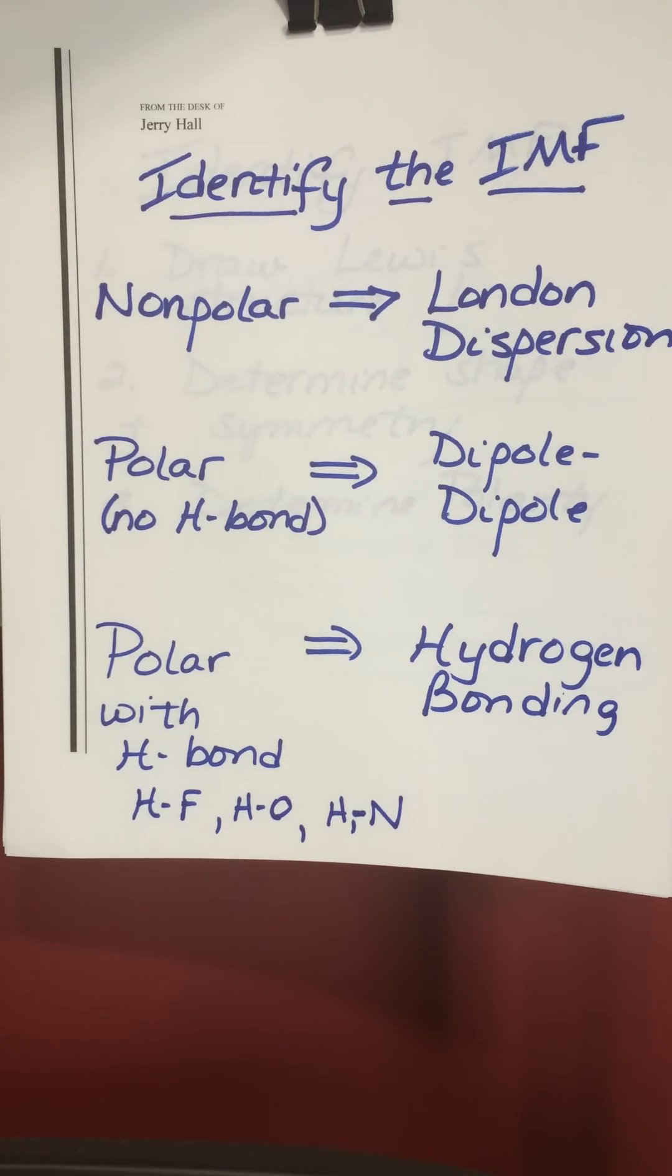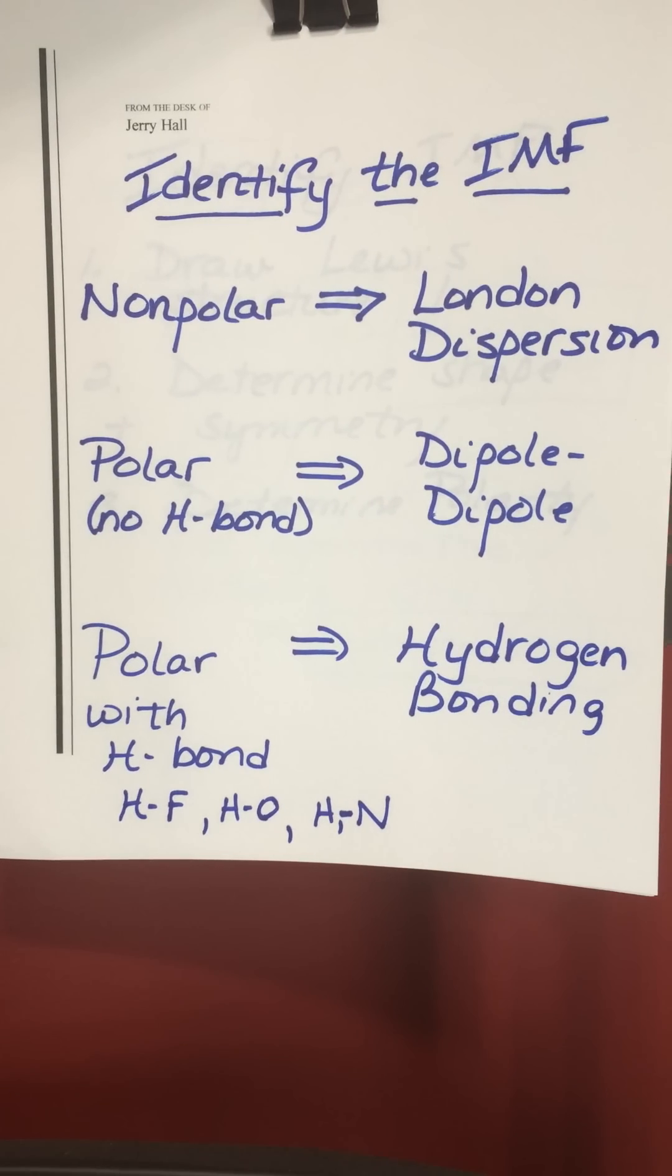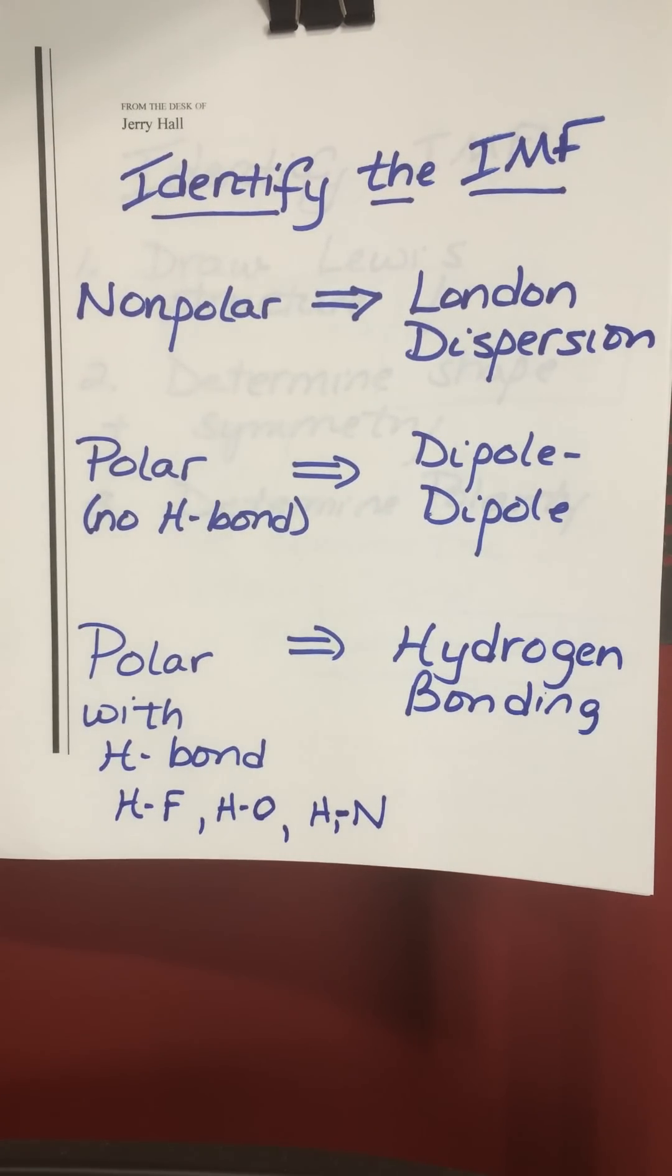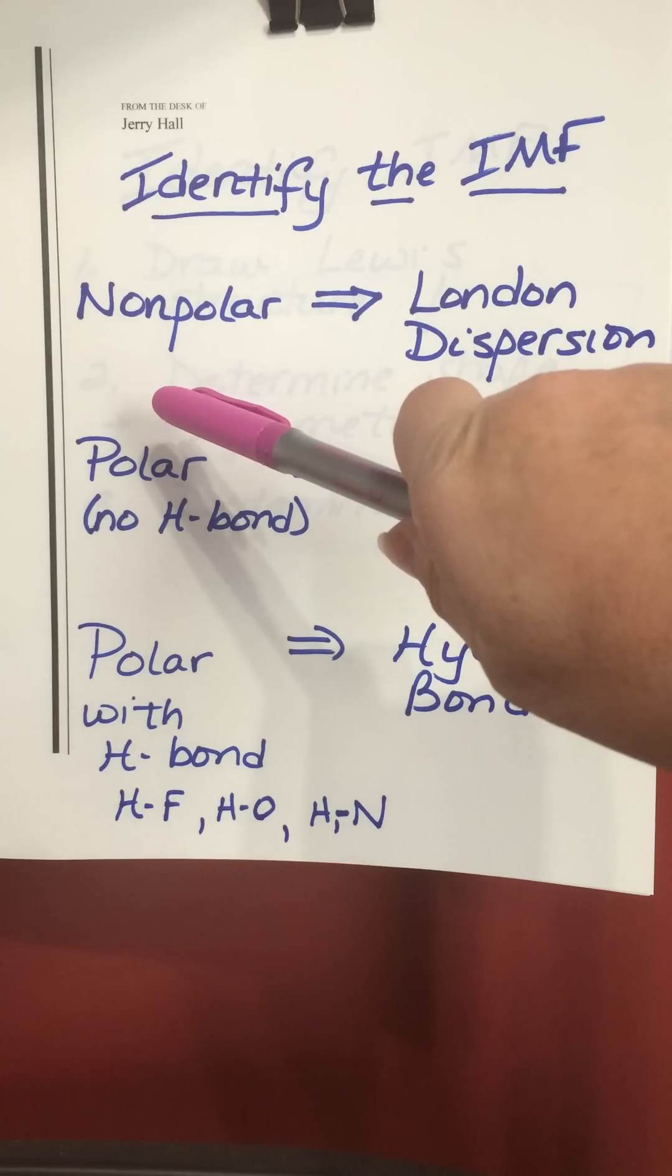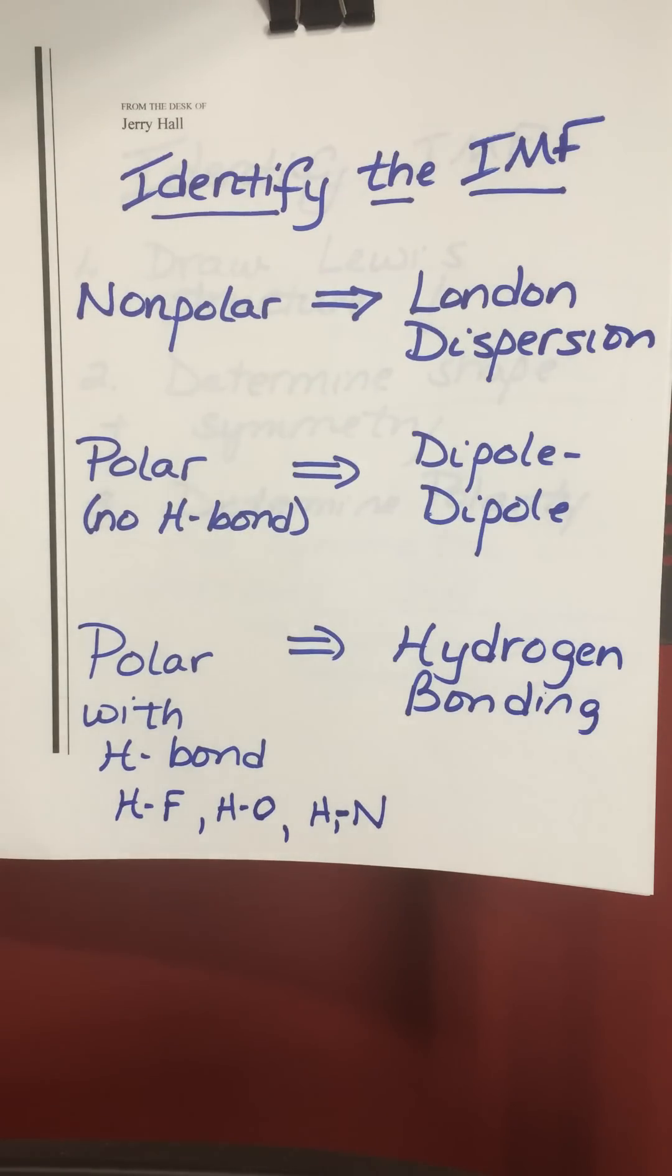This is a short tutorial on how to identify the intermolecular force, the predominant intermolecular force in a molecule. Just as a refresher, there are three types of intermolecular forces. If the molecule overall is non-polar, then its only intermolecular force is the London dispersion force, which is the weakest intermolecular force.